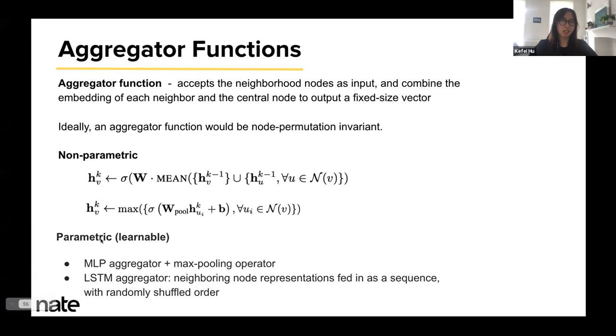Aggregator functions can be both non-parametric, such as mean pooling or max pooling, or it can be parametric, so it can contain learnable weights like a simple neural network. The most popular learnable aggregator is a single layer neural network followed by max pooling operator. You could also use LSTM, where you would feed the node representations from the neighborhood as a sequence, but you need to randomly shuffle the order so that your model can learn without overfitting to a certain order.